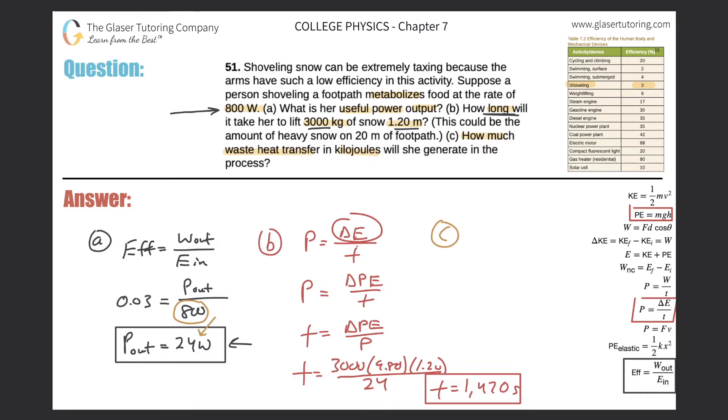So if I asked you now how many watts of power were then not used in this process, you'd say, oh yeah, it should just be a subtraction between the two—and that's exactly right. So the total amount of power that she metabolized was 800 watts, and only 24 of that was dedicated to useful power to shovel the driveway or footpath. Therefore, the remainder here, 800 minus 24, was 776 watts.